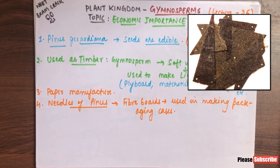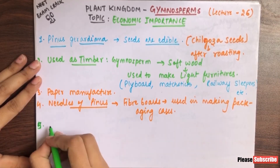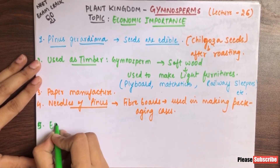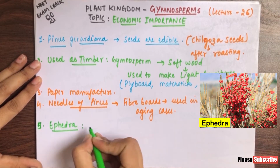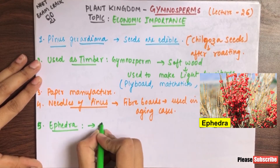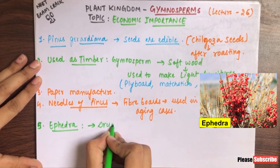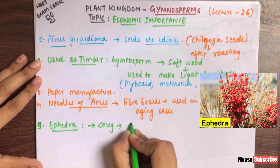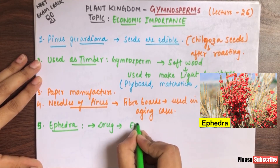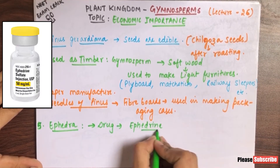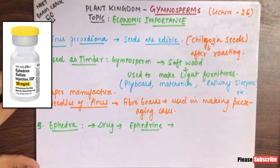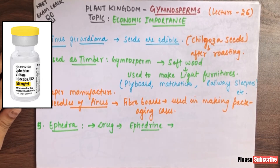Next, Ephedra — a gymnosperm — from Ephedra we get ephedrine. Ephedrine is used to cure respiratory ailments.